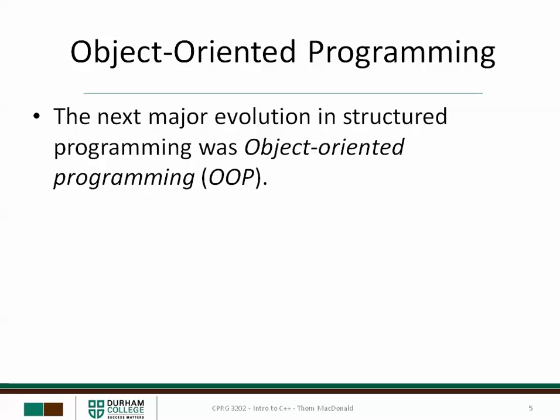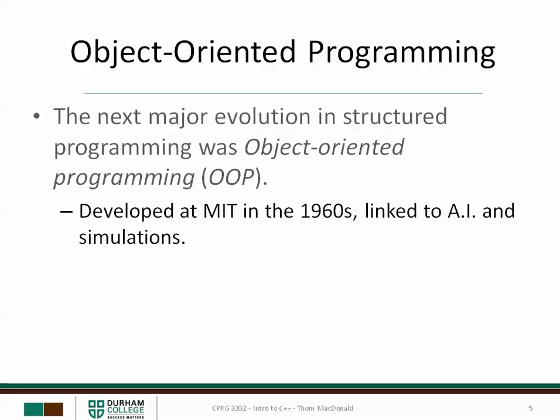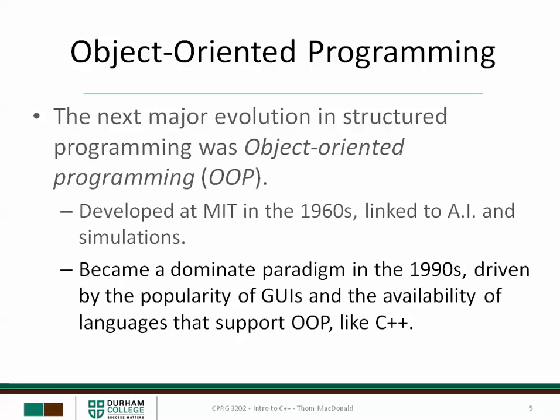The next major evolution in structured programming was called object-oriented programming. It was developed in the 1960s at MIT, and it was linked to artificial intelligence and simulations. It became a dominant paradigm in the 1990s, driven by the popularity of graphical user interfaces, as well as the availability of languages like C++ that supported object-oriented programming.